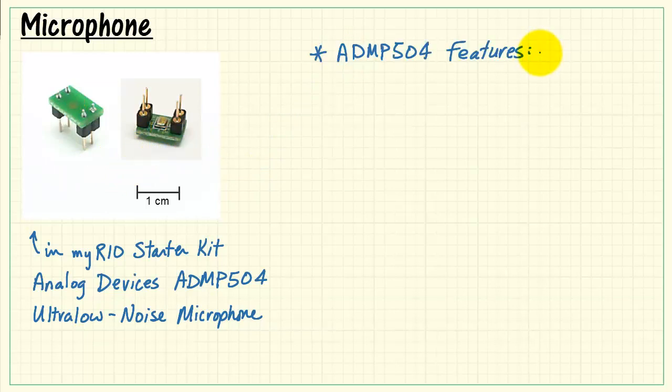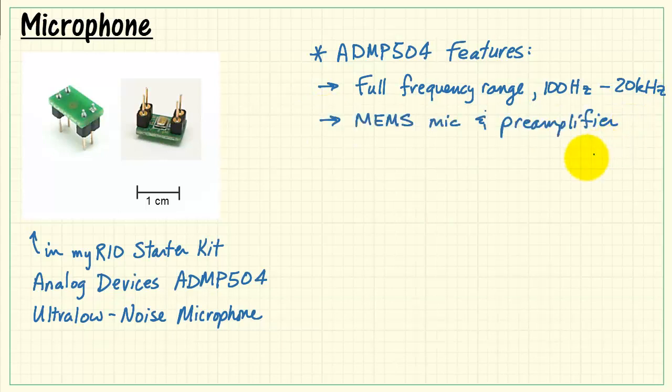Let's review some of the features of the ADMP504. The mic has full frequency range, 100 Hz to 20 kHz, and it includes a MEMS mic and a pre-amplifier. MEMS is an abbreviation for Micro Electromechanical Systems.